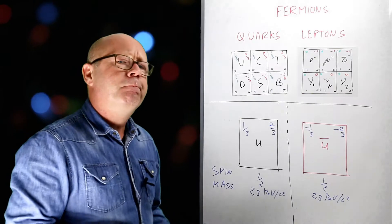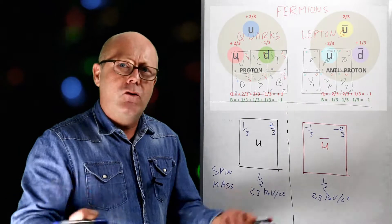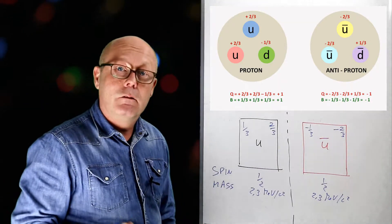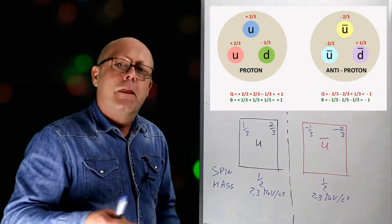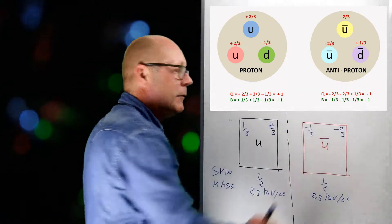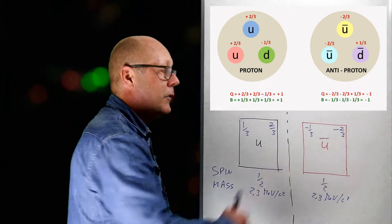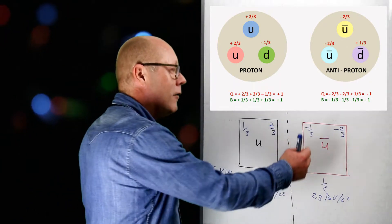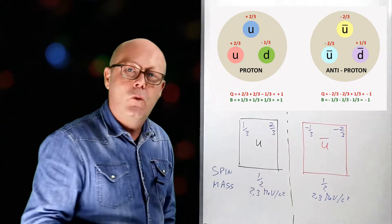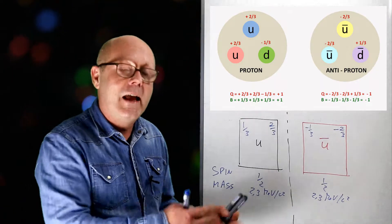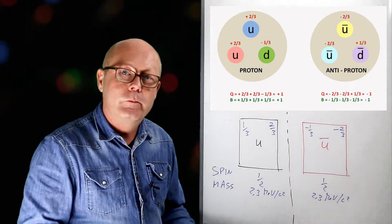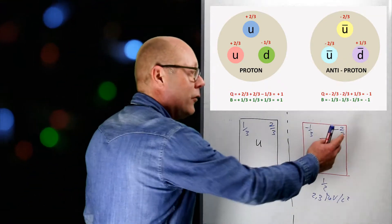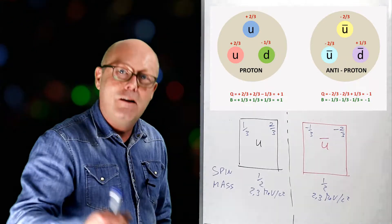Think about it. When I build a proton with two ups and one down, I get a baryon number of 1. If I build the same hadron but with anti-matter particles — two anti-ups and one anti-down — I will get a baryon number of minus 1. It will be an anti-baryon, and in that case an anti-proton. The charge will also be reversed: minus 2/3, minus 2/3, plus 1/3 gives minus 1.